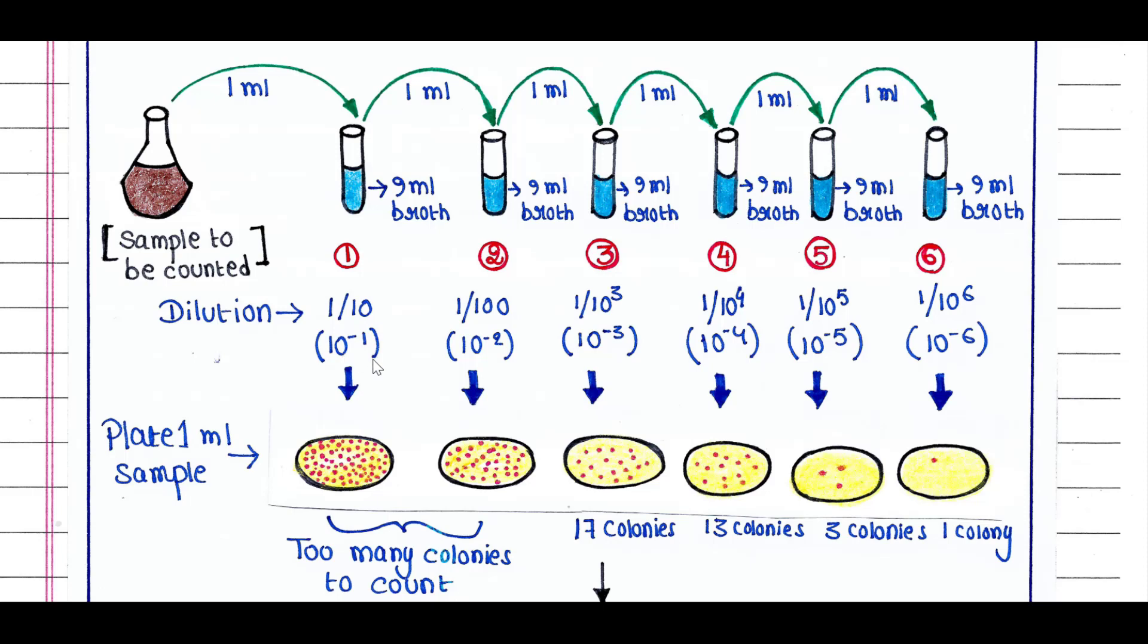Again, we will take 1 ml sample from tube 1 and put it in 9 ml broth in tube 2. That means the dilution is 1 by 100, or 10 to the power minus 2.